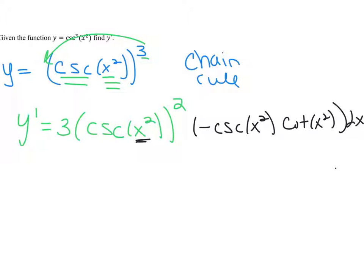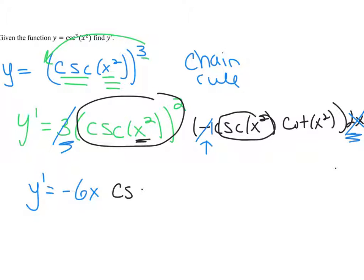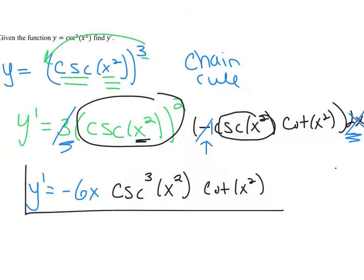Now simplify by multiplying the 3, the negative 1, and the 2x together to get negative 6x. Looking at the trig functions, I have cosecant of x squared appearing twice — combined with the original power that's cosecant cubed of x squared. So y prime equals negative 6x times cosecant cubed(x²) times cotangent(x²). That's your derivative.